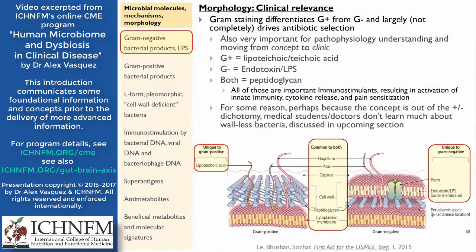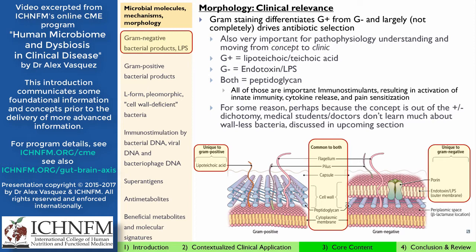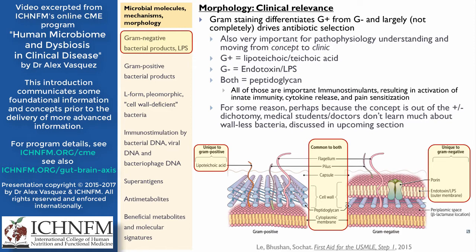Let's talk now about bacterial morphology and its clinical relevance. I'm sure we're all familiar with Gram staining as a way to differentiate Gram positive from Gram negative bacteria — part of what helps us determine antibiotic selection. Gram positive bacteria produce lipotechoic acid or techoic acid, whereas Gram negative bacteria produce endotoxin, also known as lipopolysaccharide or LPS. Both Gram negative and Gram positive bacteria can produce peptidoglycan, though Gram positive bacteria produce more of it.